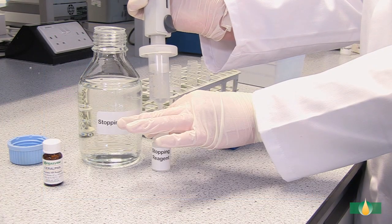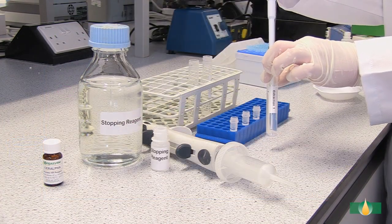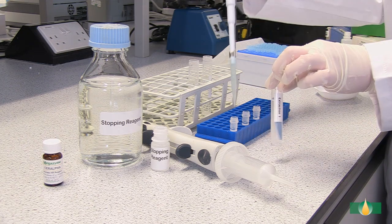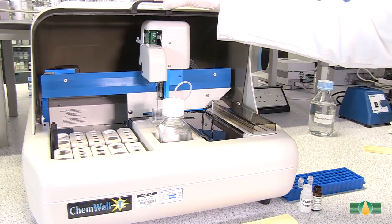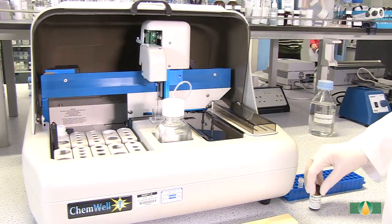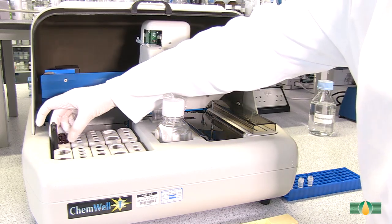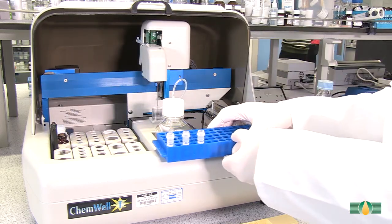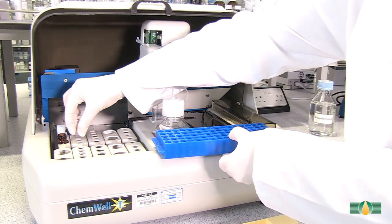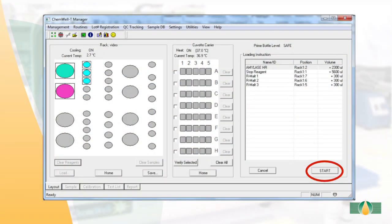Transfer the reagents and sample extracts to appropriate containers compatible for use with the ChemWell-T autoanalyzer. Ensure that samples and reagents are placed in the correct positions according to the layout, and that clean empty cuvettes are available and loaded correctly. Then select start from the layout tab.